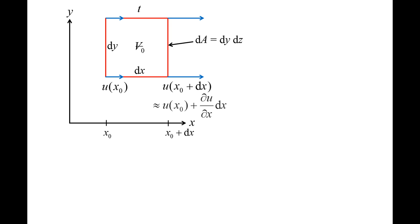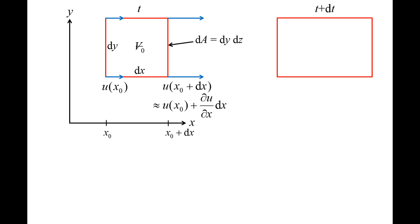Assuming dx is very small, we can use a Taylor series approximation to relate the velocity on the right side to the velocity on the left side: u at x₀ + dx is approximately equal to u at x₀ plus (∂u/∂x)·dx. The partial derivative ∂u/∂x is evaluated at x₀ as well, but we leave off the x₀ notation to avoid cluttering the screen. After a very small time dt passes, the fluid element translates and undergoes linear strain in the x-direction, since the velocity on the left and right sides are different.